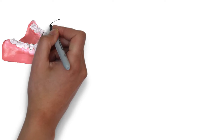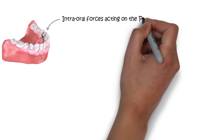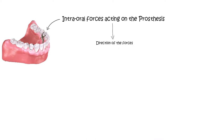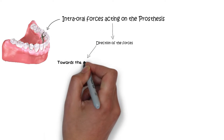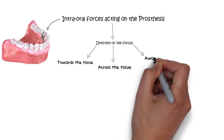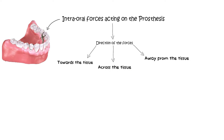When a removable partial denture is placed inside the oral cavity, there are many different forces that act on that prosthesis. The direction of these forces on the denture can either be towards the tissue, across the tissue, or away from the tissue, depending upon whether the acting forces are vertical or horizontal. The forces that act to move the denture towards the tissue or across the tissue are of greatest intensity.